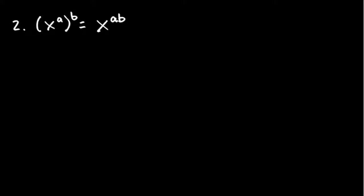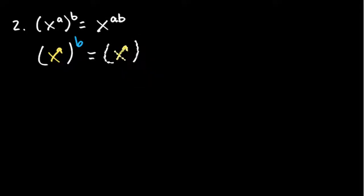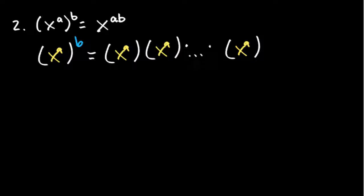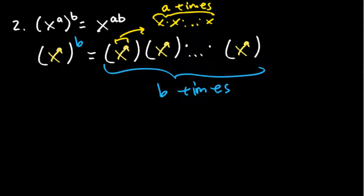Now let's look at the second property: x to the a, raised to the power of b. I'll color-code that so we can analyze them separately. What this means is you take x to the a and multiply it to itself — the question is how many times. You multiply it b times. And on the inside, x to the a means x times x, multiplied to itself a times.